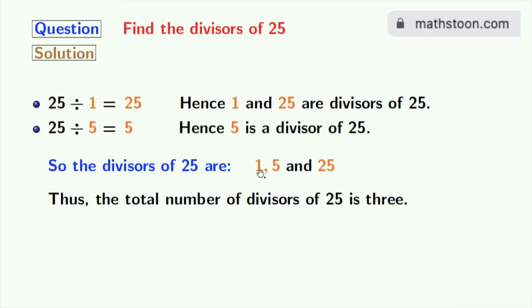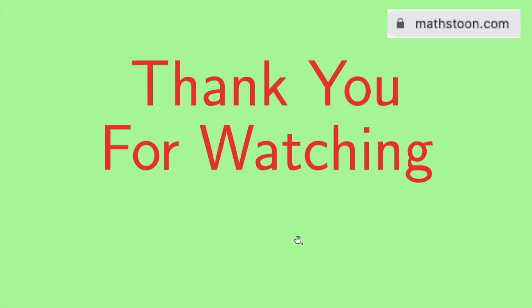Now, among these divisors, 5 is a prime number because this number does not have any divisor other than 1 and 5 itself. So, we can say that the prime divisor of 25 is only 5.